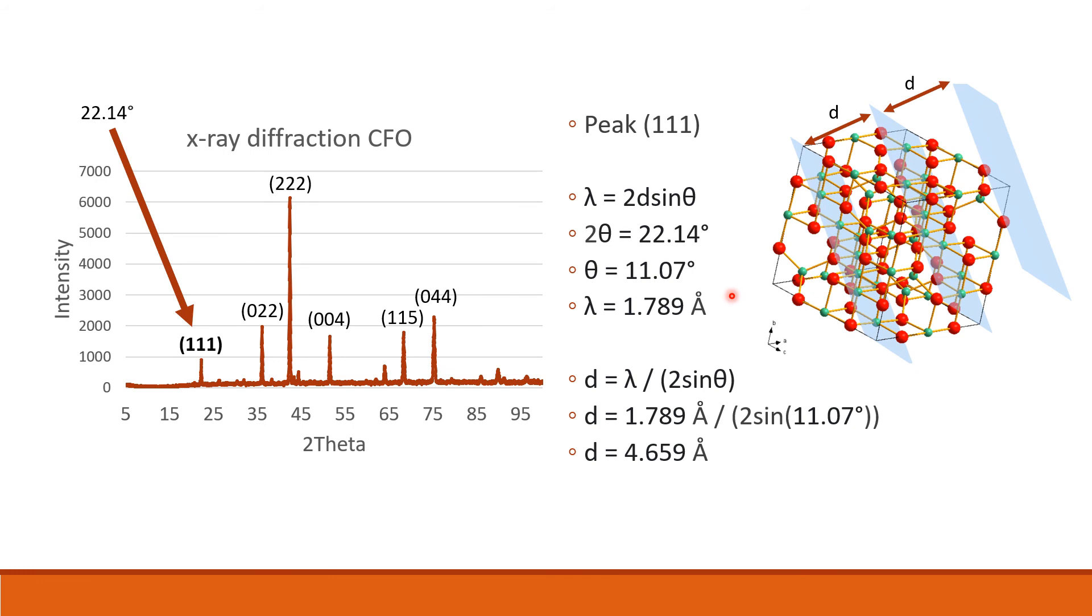We also have λ, which is just the wavelength of the x-rays that we used, which was 1.789 angstroms. We can plug these both into Bragg's law and find that the d spacing between the planes is equal to 4.659 angstroms. This can be visualized here, where the d spacing is between each of these planes, and this is the crystal structure of CFO.